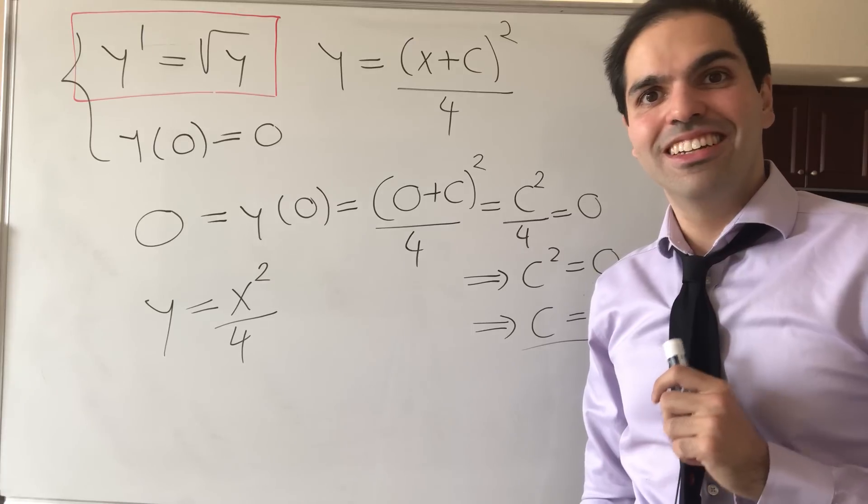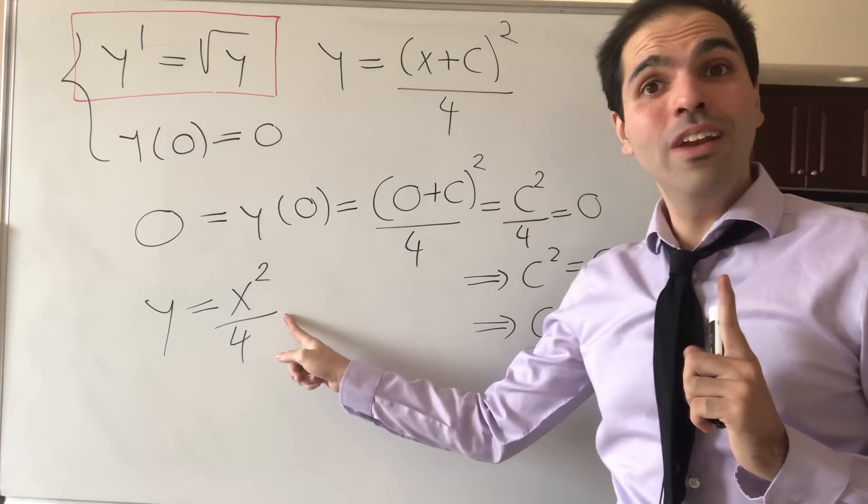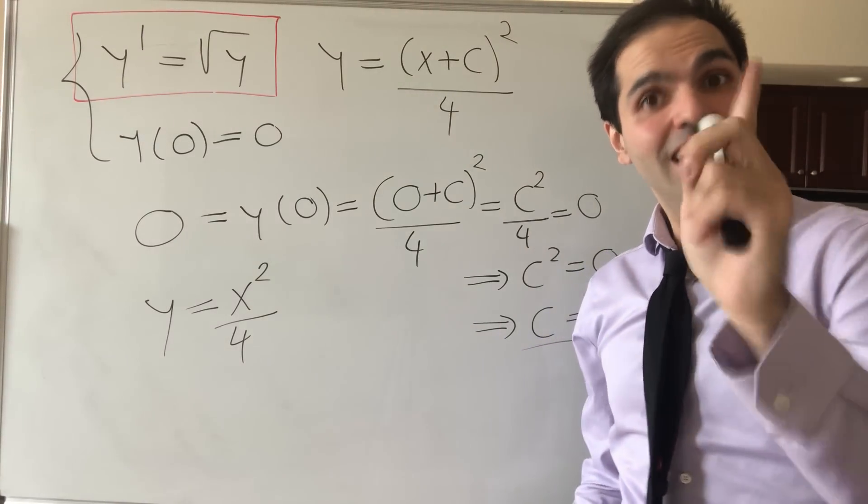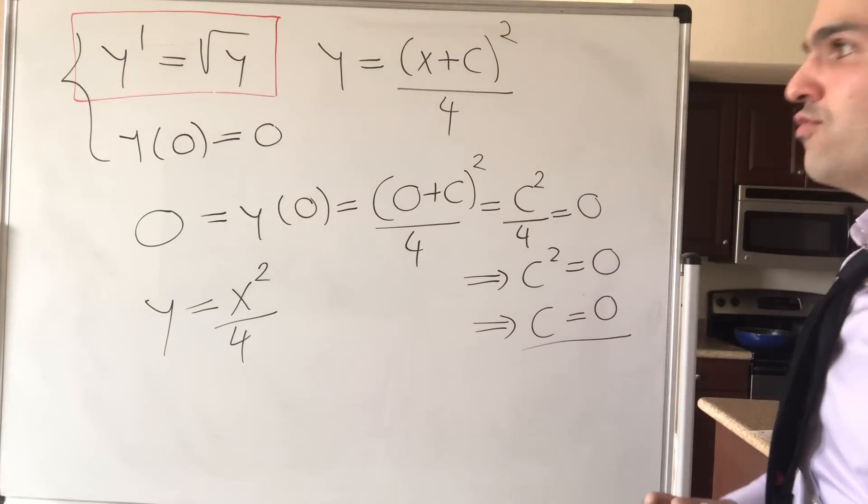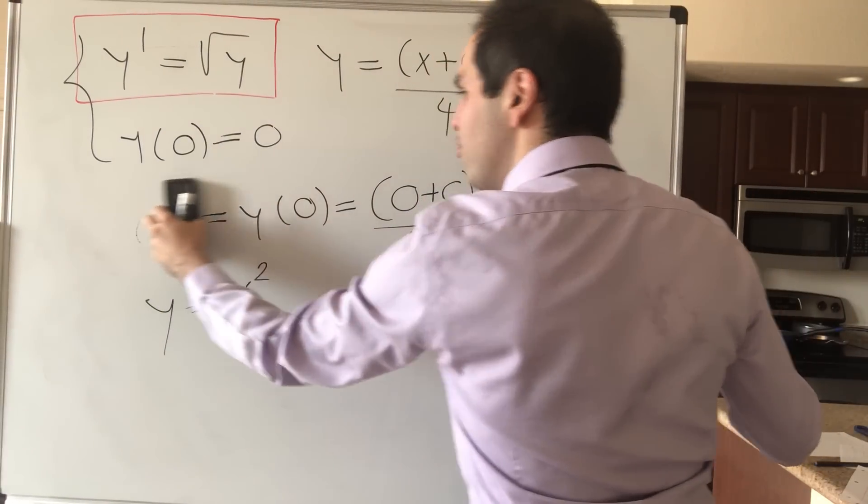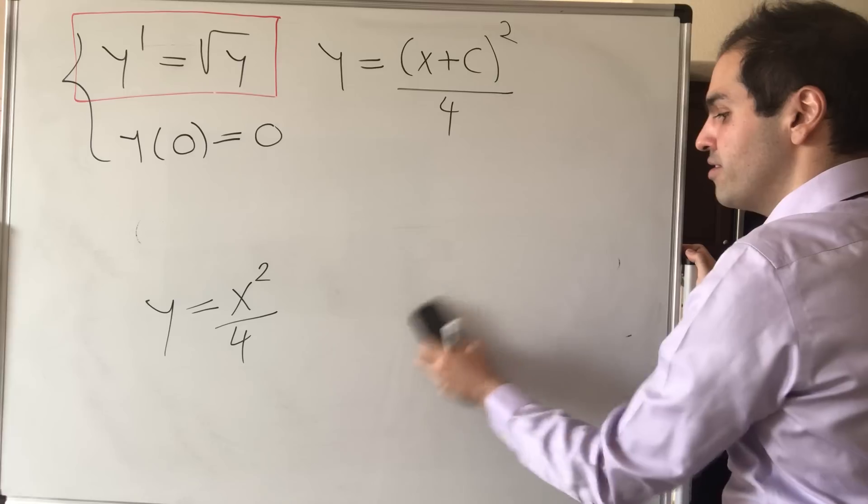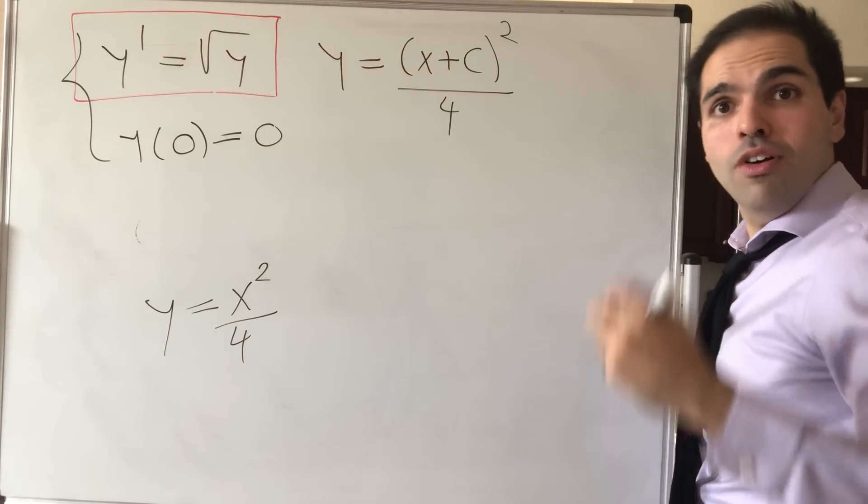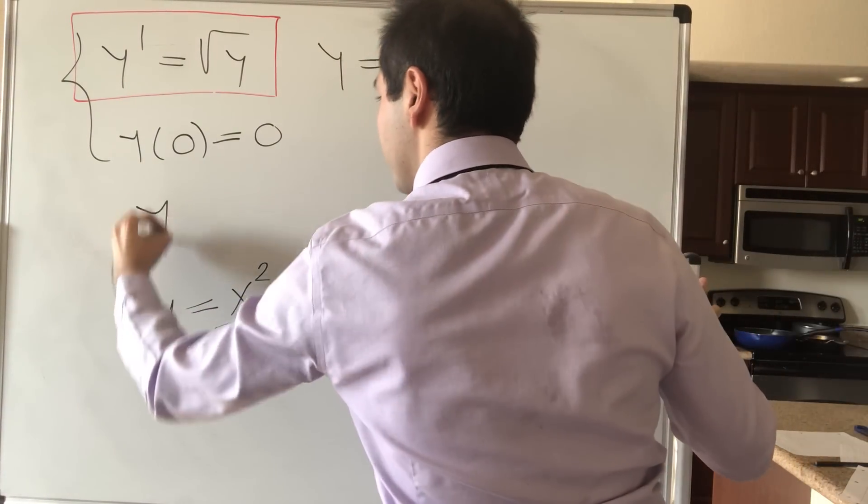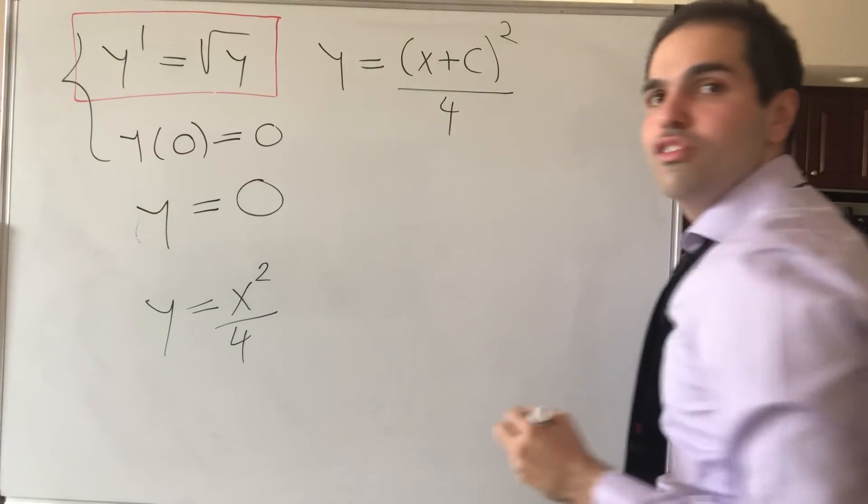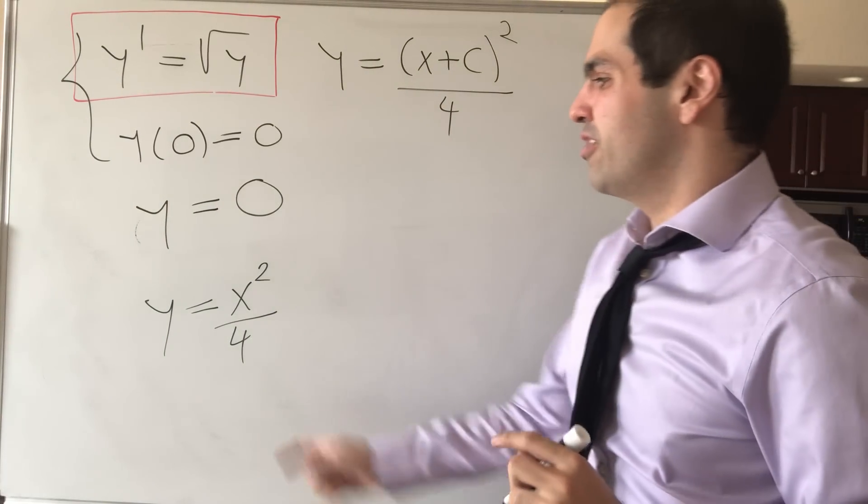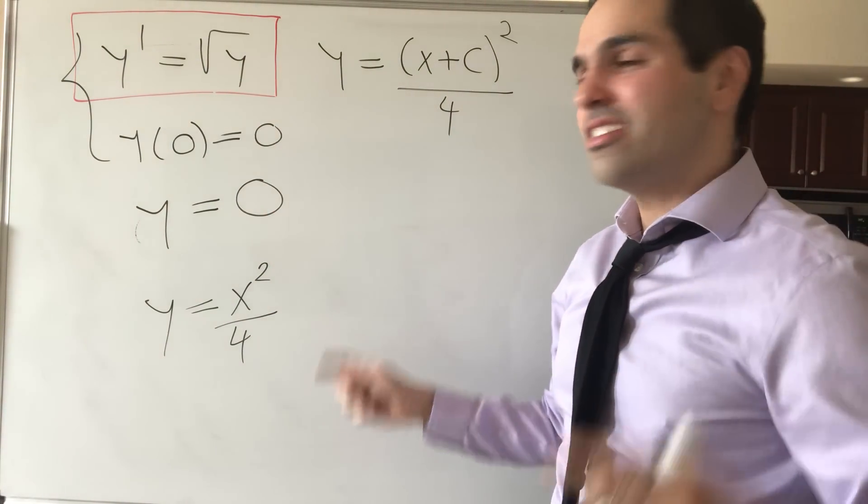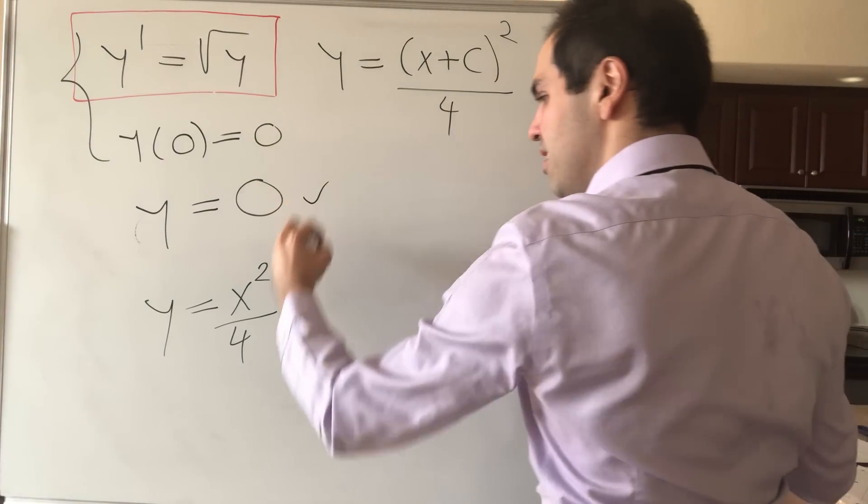So you can check this solves the equation and y at 0 equals 0. Now here comes the question. Is this the only solution? It turns out that no. Because, for instance, what's another function that satisfies this? Well, the 0 function. That also works. The derivative is 0, which is square root of 0. And initially it is 0. So this works. This works.